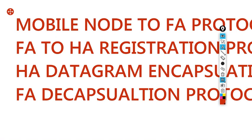The first one is the mobile node to foreign agent protocol, because when the mobile node moves from the home network to the foreign network, that will be handled by the foreign agent. Then, whatever IP is given by the foreign agent to the mobile node, that has to be informed to the home agent — that is done by the foreign agent to home agent registration protocol.